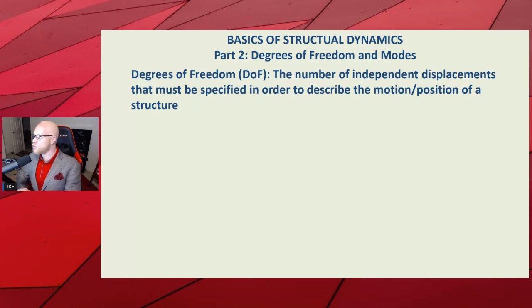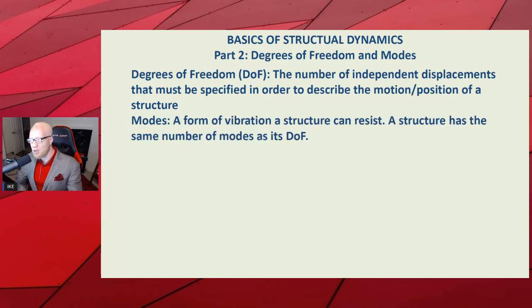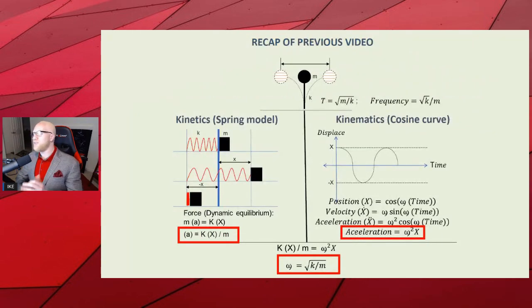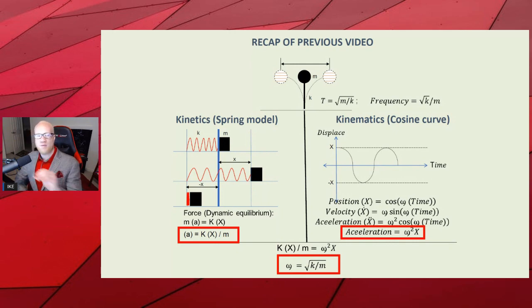As usual in this channel, we start with words. Modes are the form or shape of vibration that a structure can resist. A structure has the same number of modes as degrees of freedom. So this lollipop — this upside-down pendulum — has one mode because it has one degree of freedom. The mode is: it goes back and forth. That's the shape. It has one shape because it has one degree of freedom.